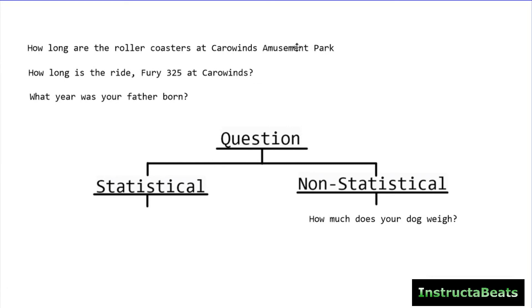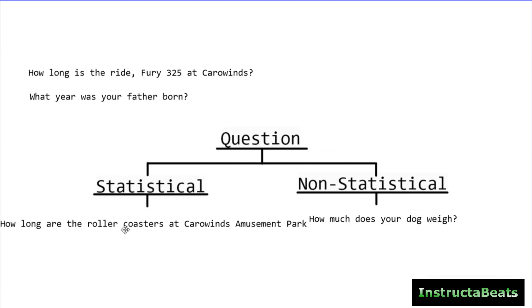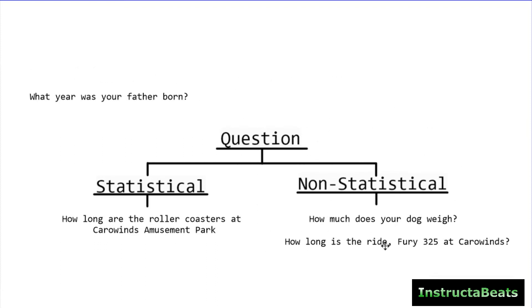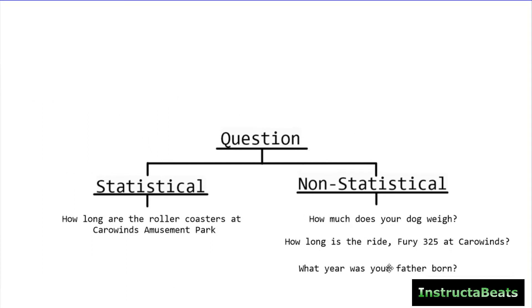'How long are the roller coasters at Carowinds Amusement Park?' This is a statistical question because there are multiple roller coasters at the amusement park — you have to go around and collect data for each one, and because not all the rides are the same, there's going to be natural variability in the data you collect. My third question: 'how long is the ride Fury 325 at Carowinds?' This is a non-statistical question. Yes, you might have to go collect data or measure, but there's only one answer — there won't be any variability because it's just one ride. That's the difference between this question and the previous one. And our last one: 'what year was your father born?' This is a non-statistical question because we're anticipating only one answer — you're asking one person, and there's only one answer to that question with no variability.